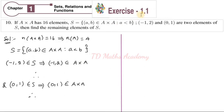Students, this is Exercise 1.1, Question 10. Given that A cross A has 16 elements. n(A×A) = 16 means n(A) = 4. So the number of elements in A is 4. That is the first piece of information.